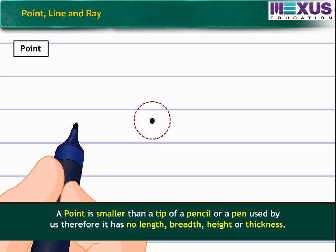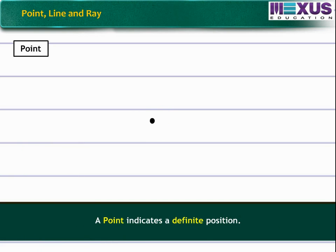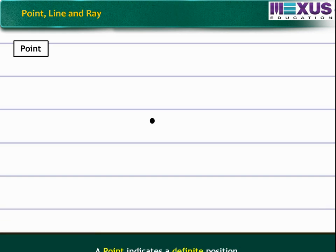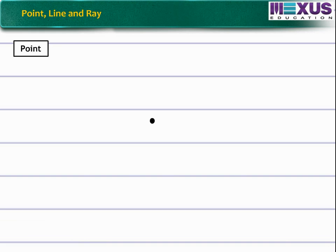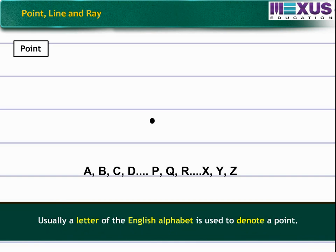Therefore, it has no length, breadth, height or thickness. A point indicates a definite position. The dot itself is not a point. Usually, a letter of the English alphabet is used to denote a point.